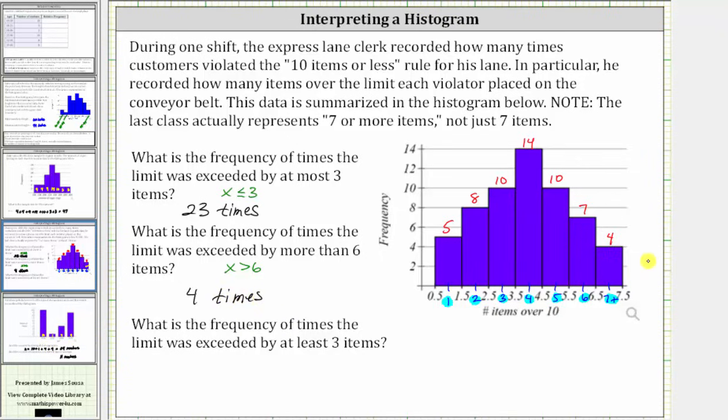For the last question, what is the frequency of times the limit was exceeded by at least three items? If x is at least three, x is greater than or equal to three, which includes the classes or categories of three, four, five, six, as well as seven or more. Adding the frequencies, we have ten plus fourteen plus ten, that's thirty-four, plus seven, that's forty-one, plus four is forty-five. The number of times the limit was exceeded by at least three items was forty-five times.